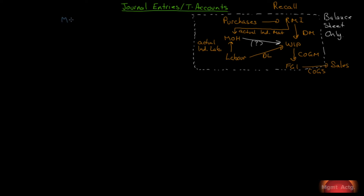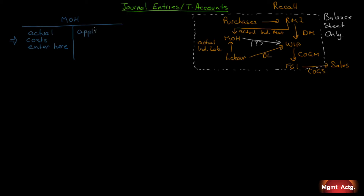We were left with the problem of how do we transfer the manufacturing overhead that we actually incurred into work in process. In our manufacturing overhead costs, in the journal entries we've done, we've noticed that actual costs enter here on the debit side. However, when it leaves, it will be applied amounts that leave, not the actual amounts. The actual amounts go in, the applied amounts leave. So, manufacturing overhead is what we would call a clearing account. We collect actual costs on one side and apply them on the other side.